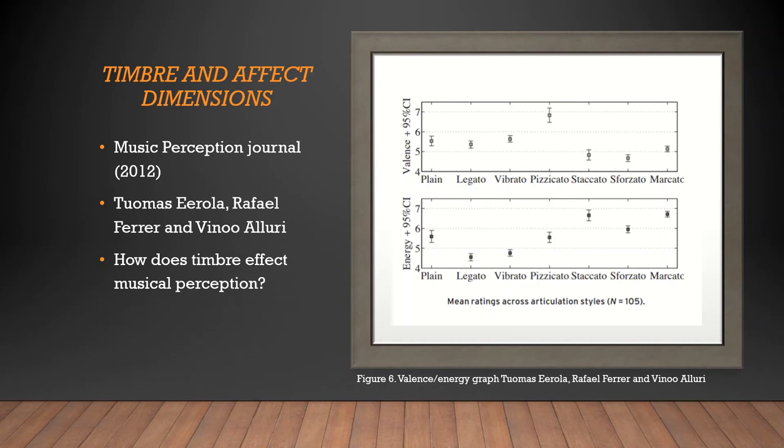High consistencies among the rest of the affect rating suggest that isolated instrument sounds contain adequate cues for perceiving the emotional expression. As shown in Figure 5, positively valence sounds tended to have belonged to the slow attack category, which included plain, legato, and vibrato. Pizzicato was the outlier, and the positively valence sounds also tended to have a longer decay and lower attack slopes.